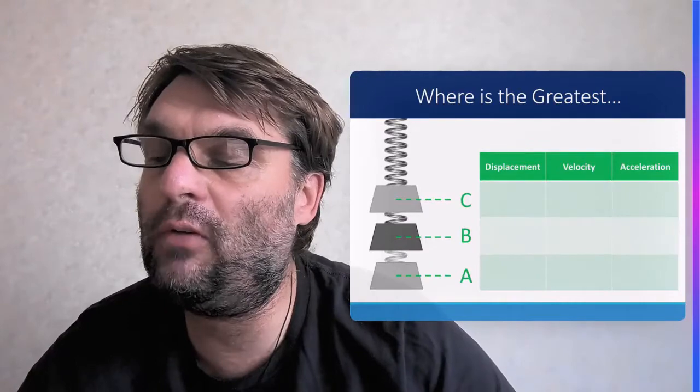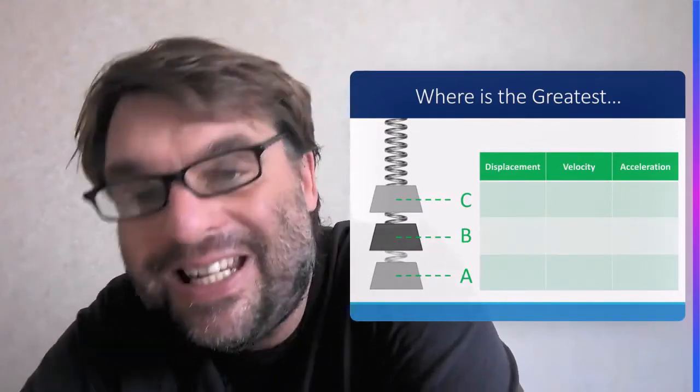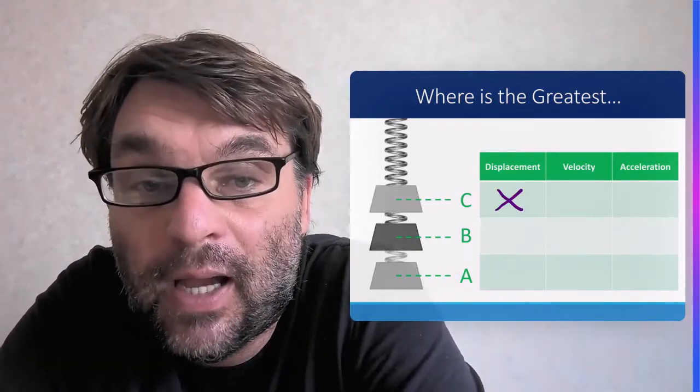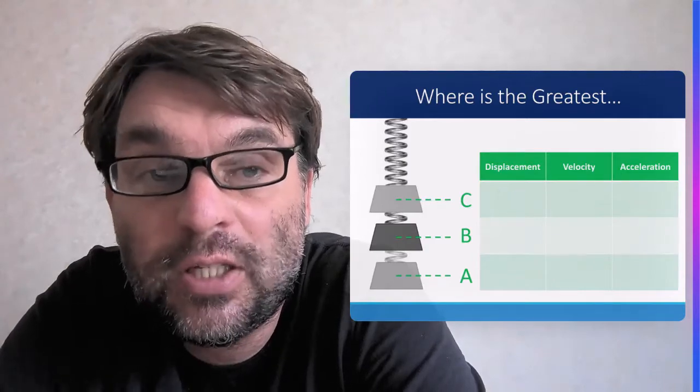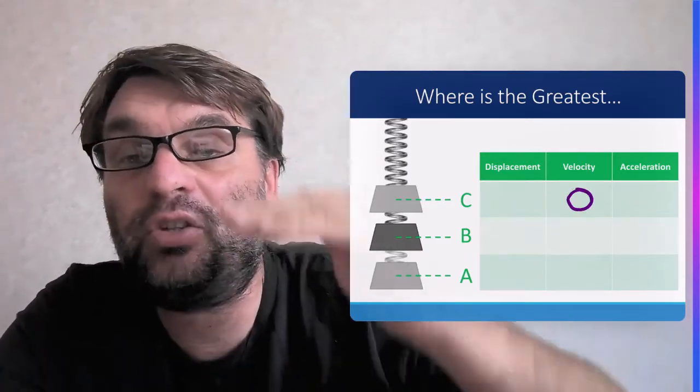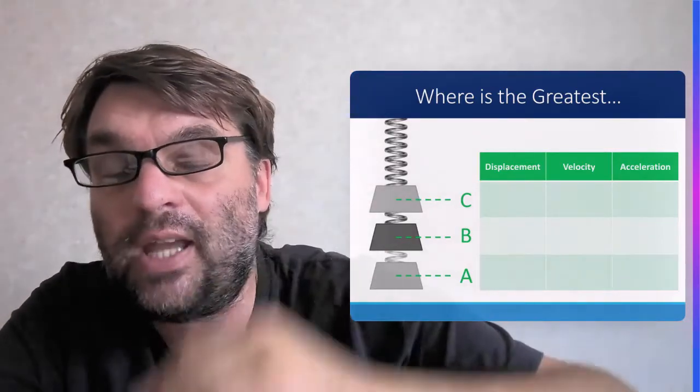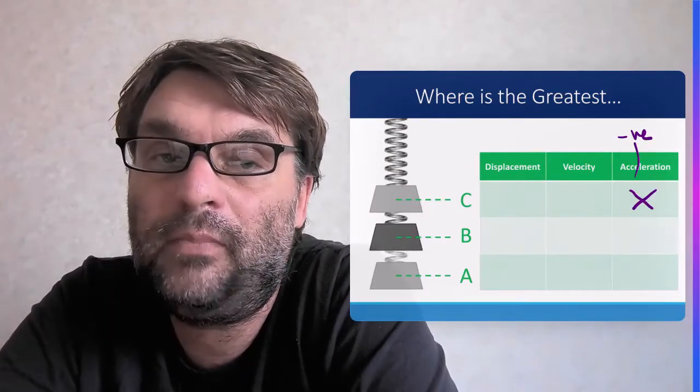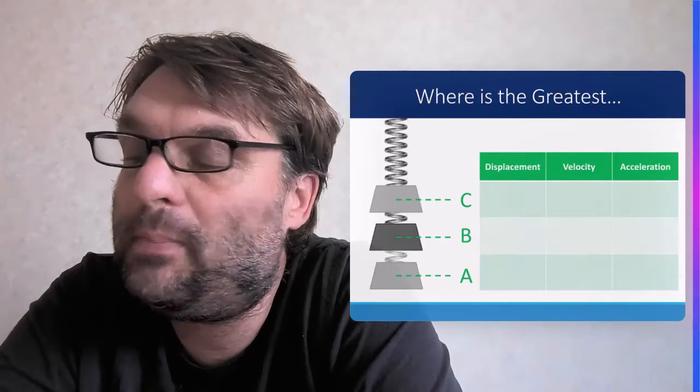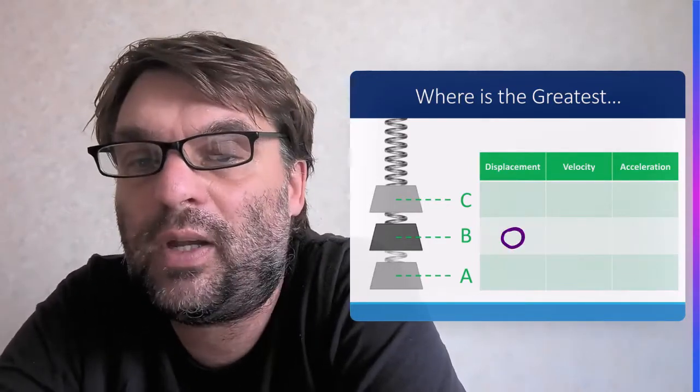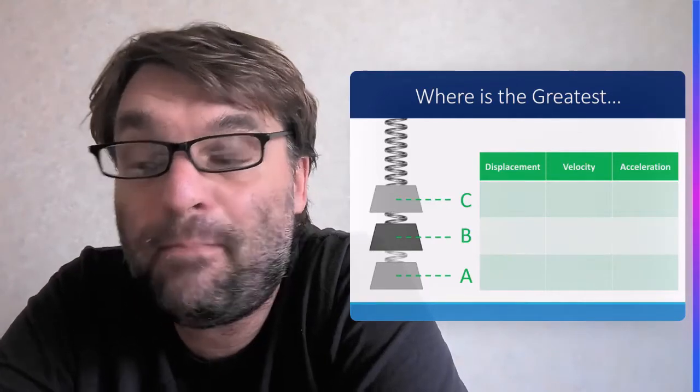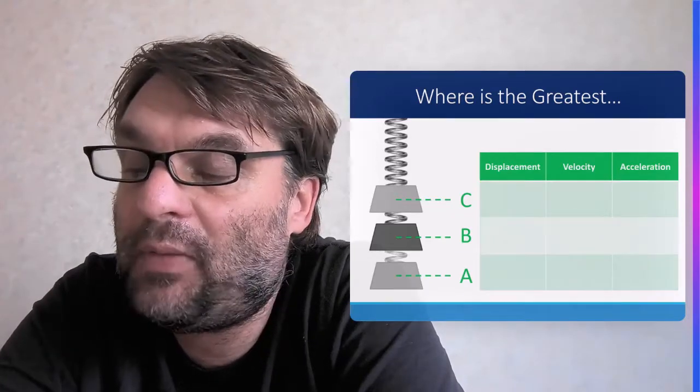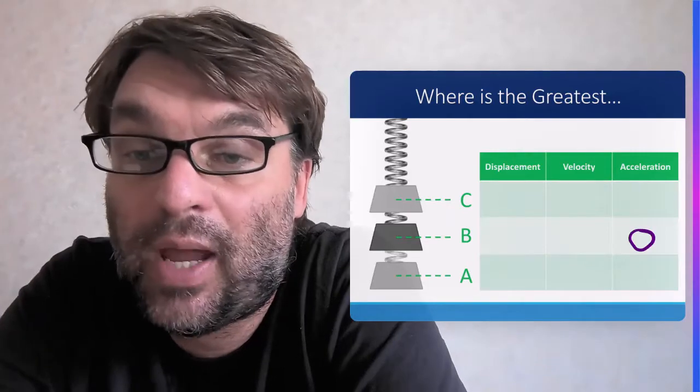So in terms of where things are the greatest, at point C, that's the greatest displacement from the initial conditions. The velocity will be at zero. It goes up, zero, starts to go down again, starts to accelerate. And the acceleration will also be a maximum at point C. At point B, displacement zero, so right back to where you began. The velocity will be a maximum this time as you're going through that point, and the acceleration will also be zero at that point.